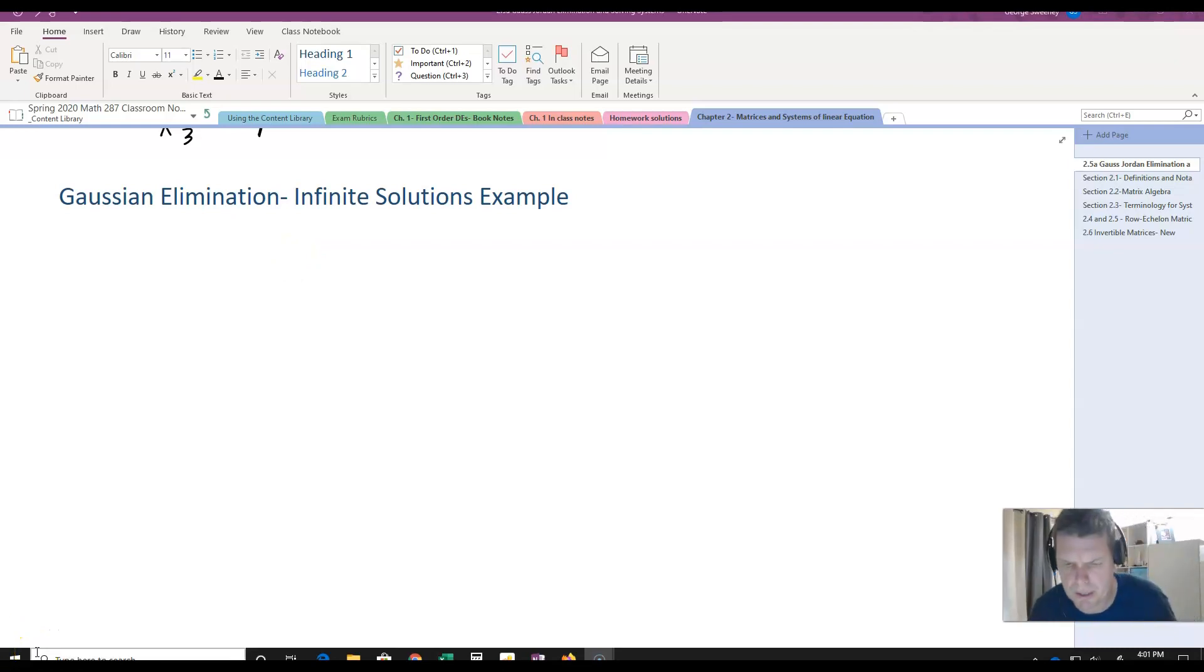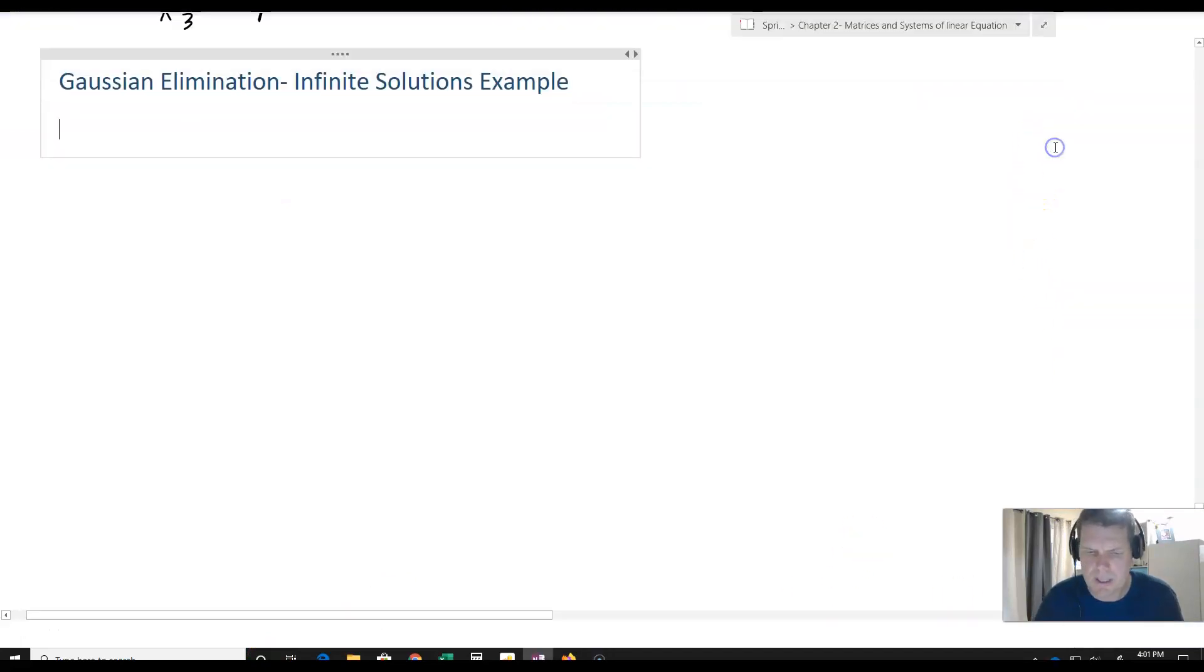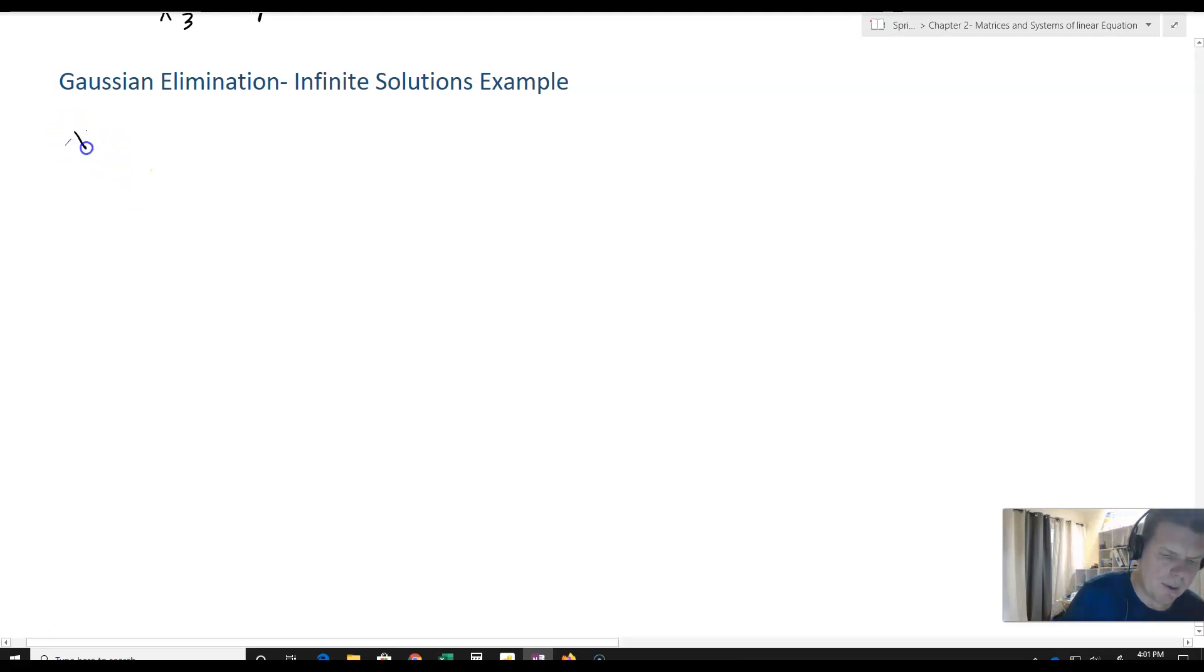Now we're going to look at another Gaussian elimination example, but this time we'll examine a system that has an infinite number of solutions to see what happens and how we interpret those solutions. Let's start with our equations: x1 - 2x2 - x3 + 3x4 = 0, -2x1 + 4x2 + 5x3 - 5x4 = 3, and 3x1 - 6x2 - 6x3 + 8x4 = 2.